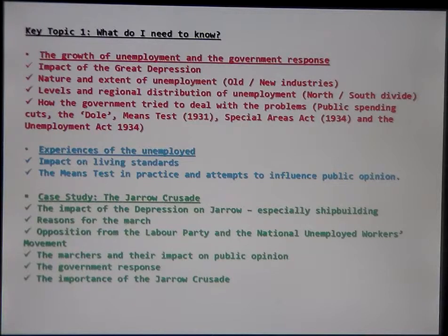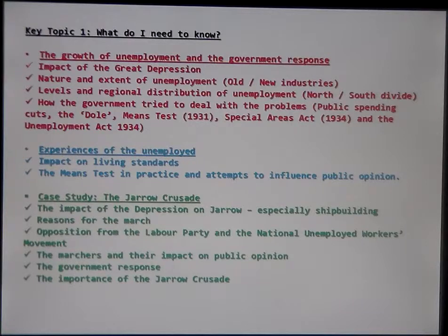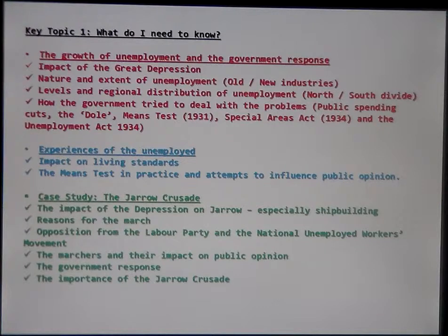The biggest hatred felt was towards the means test, when inspectors from the public assistance committees would come in and inspect what you had. If you had items that could be sold, they had to be sold before you could receive your dole money. The dole was the money received after your unemployment benefit — funded through national insurance contributions — ran out. Dole money could be reduced if parents lived with you or if children were earning even a part-time wage. It was embarrassing and humiliating. In Durham, they refused to carry it out, but in other areas it was enforced quite strictly.